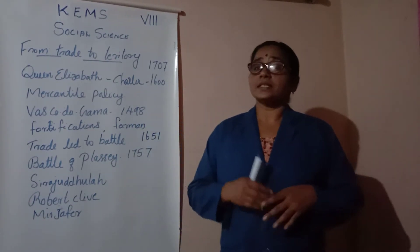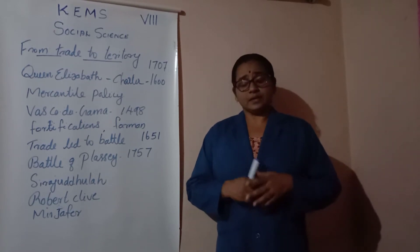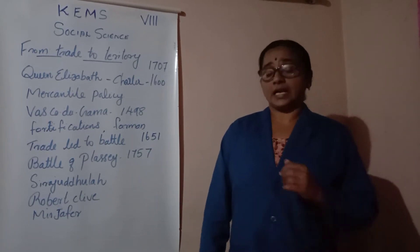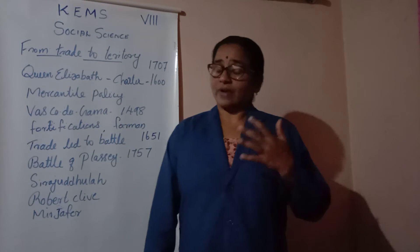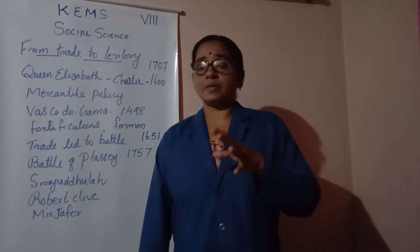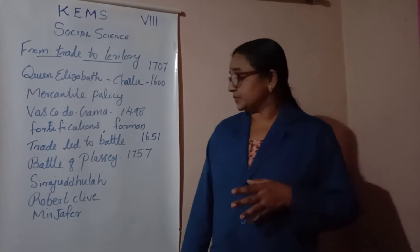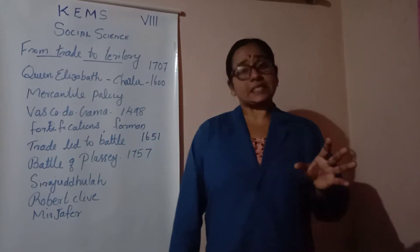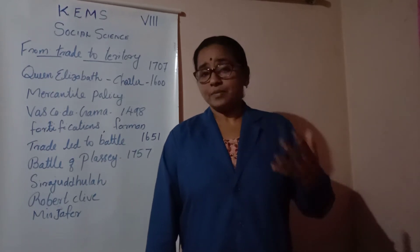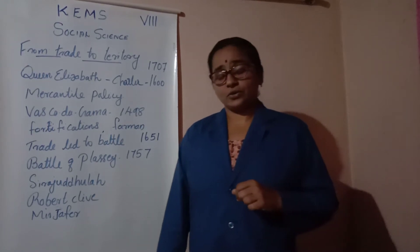The English East India Company started trade with Bengal. The first factory was set up on the banks of the River Hooghly in Bengal. That factory means a warehouse. The company officials persuaded merchants to live near the factories. They also bribed Mughal officials and got the right to Zamindari.